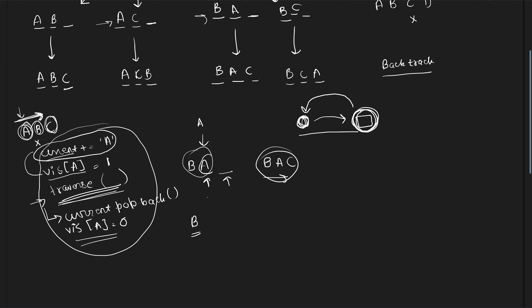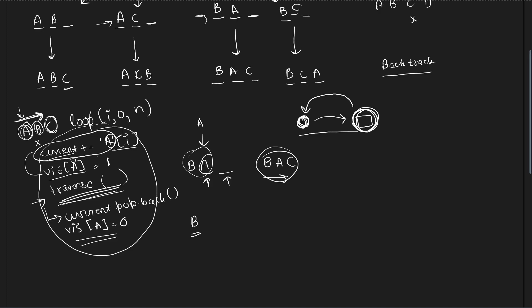This is the power of recursion — we divide the problem into smaller sub-problems and it gets taken care of automatically. To visit all characters other than A, we make a loop starting from 0 to the size of the string, and instead of A, we use S[i]. We append S[i] and mark index i as visited, making the code more modular. This is how you solve this problem.